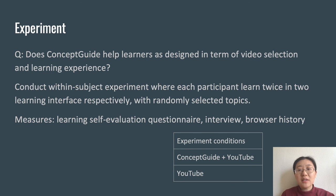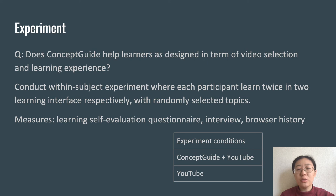To evaluate the Concept Guide system, we ran a user experiment and compared it with the original YouTube interface, testing how Concept Guide helped learners with learning experience and video selection. We conducted a within-subject experiment with 16 college students. Each participant had two learning sessions — one with YouTube and another with Concept Guide. In the Concept Guide condition, participants could still search on YouTube when needed. The order of learning system and topic were counterbalanced to mitigate possible ordering effects.